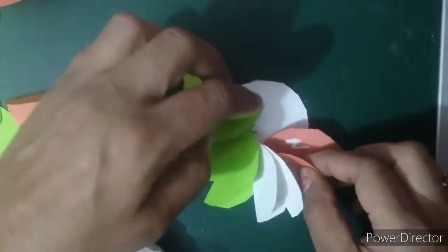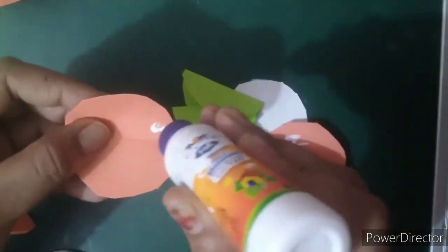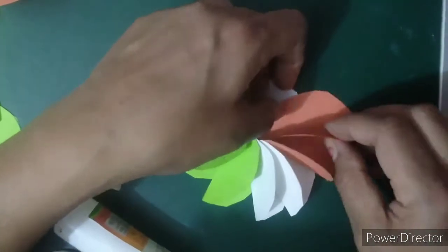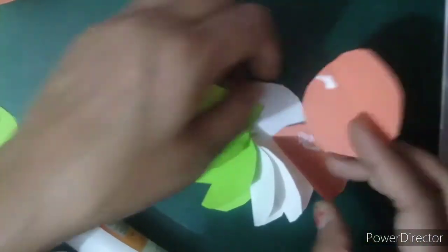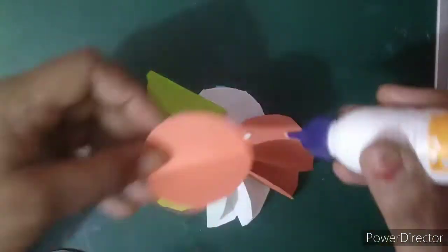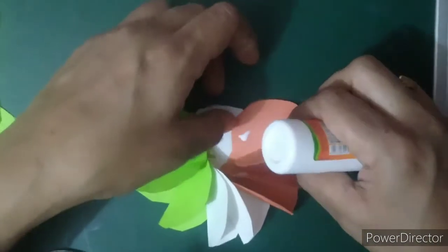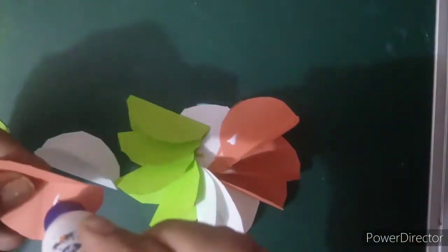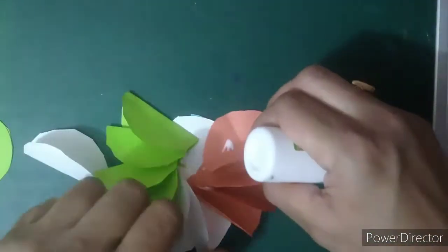Now I am going to put all 4 orange circles like this. You can see I am putting it one by one in a triangular way so that it will look proper. This is 3rd and this is last one 4th. I am covering all the parts.